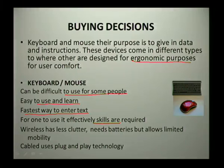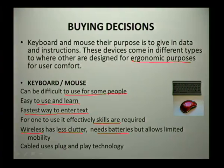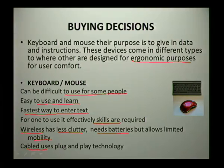Keyboards and mice come in two types. Wireless versions offer less clutter but require batteries and have limited mobility — you can't be too far from the receiver. Cabled keyboards and mice use plug-and-play technology, meaning you don't have to worry about installing drivers for the device.